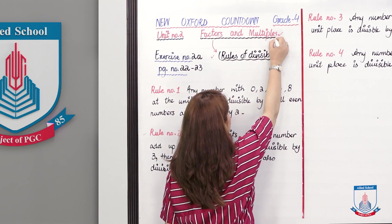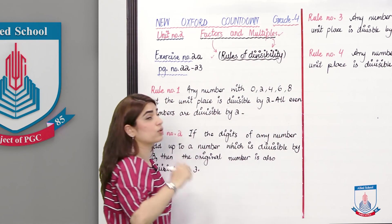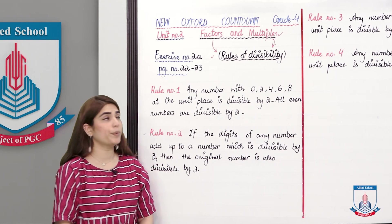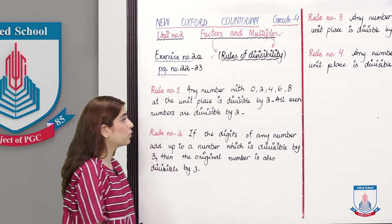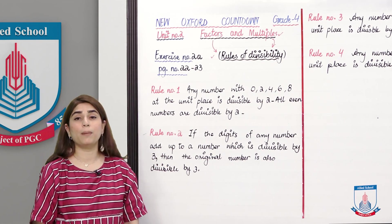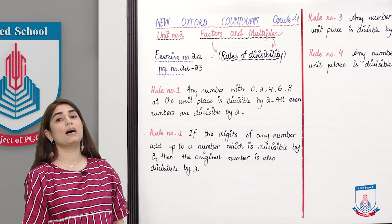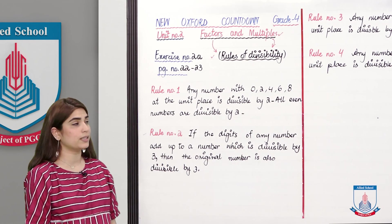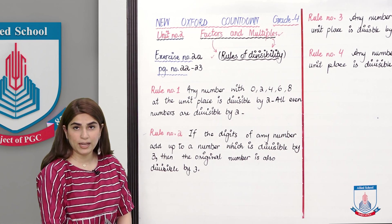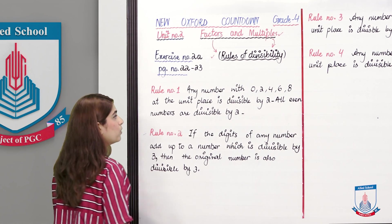I have written the Rules of Divisibility here. There are 4 rules written in the book. These rules are also given to you on page number 20 — you can study them there. We will read them once and I will tell you how to apply each rule.